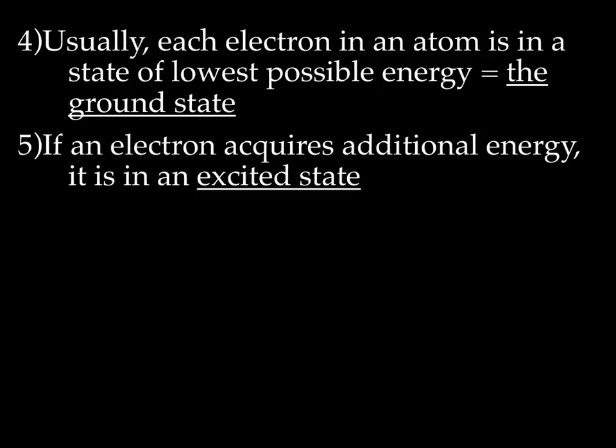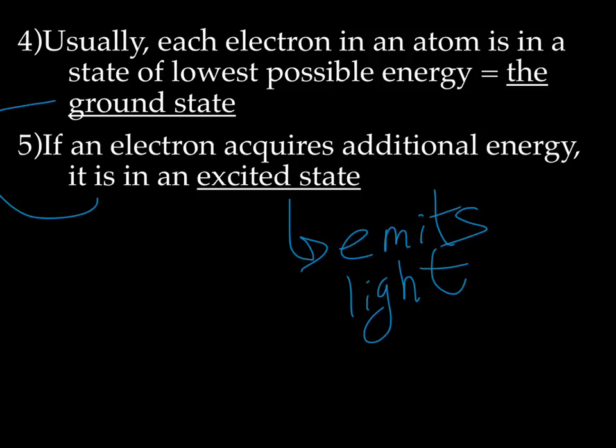Usually, each electron in an atom is in its state of lowest possible energy. We call that the ground state. If an electron acquires additional energy, it's in an excited state. And again, remember, that's not where the electron wants to be. So when it's in an excited state, that's when it emits light to fall back to the ground state.